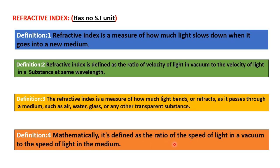Mathematically, it is defined as the ratio of the speed of light in vacuum to the speed of light in the medium.